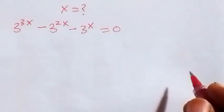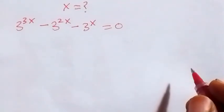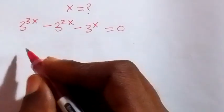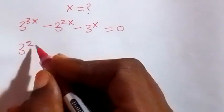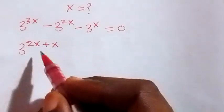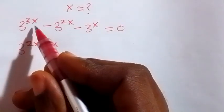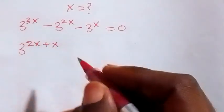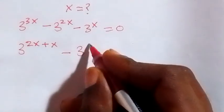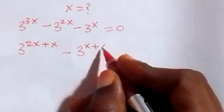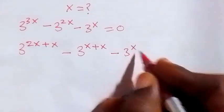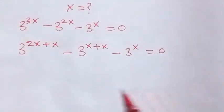From here we can separate this using the law of indices. We can write this as 3 raised to power 2x plus x — since 2x plus x is 3x — and also let's separate this as 3 raised to power x plus x, then minus 3 raised to power x, equals to 0.